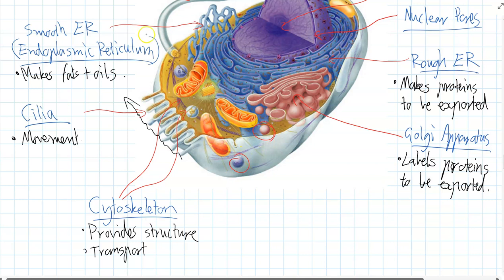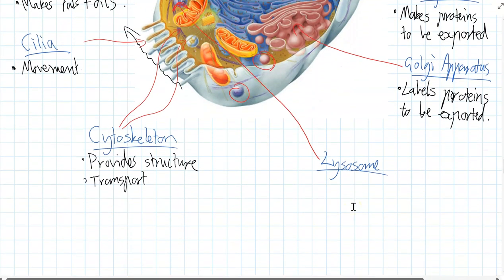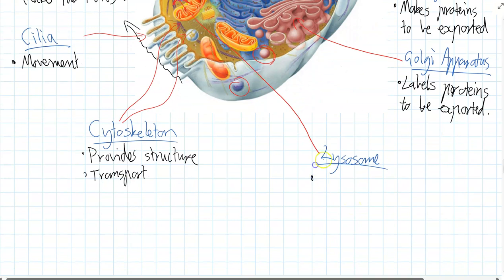Some of the round organelles that look like vesicles have grainy substances in them. This slightly different type of vesicle is called a lysosome. Lysosomes are essentially just a rubbish bin or rubbish disposal. They take any old molecules or any old organelles and destroy them, breaking them down using lots and lots of different proteins so the cell can re-use all of those parts again.